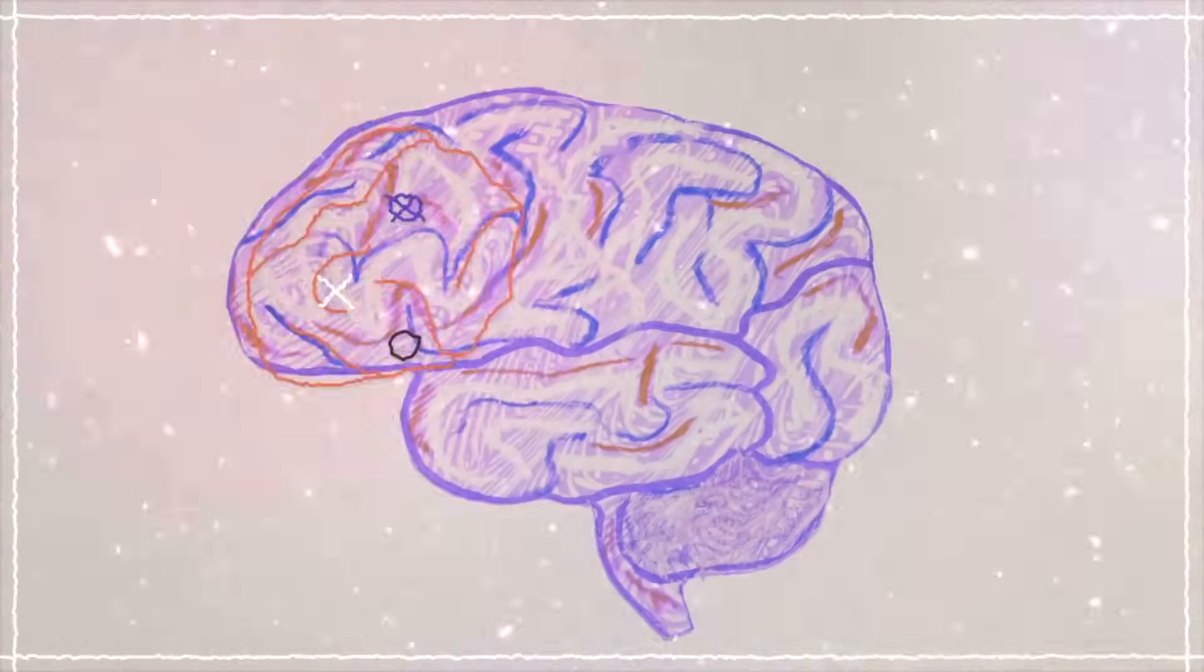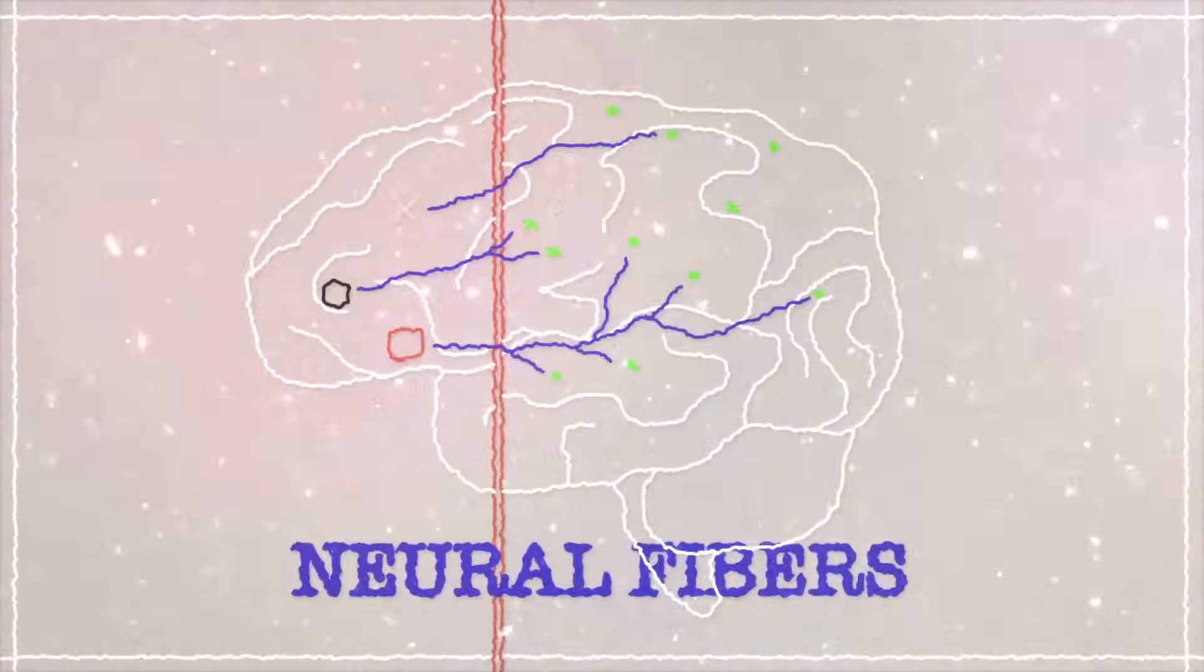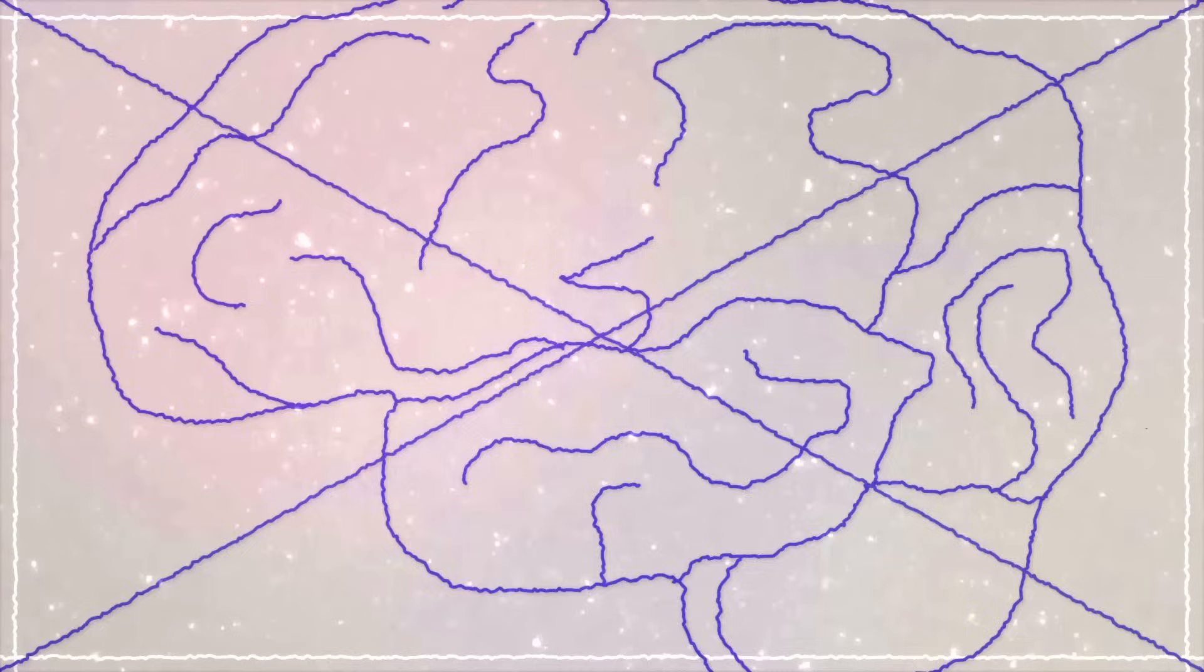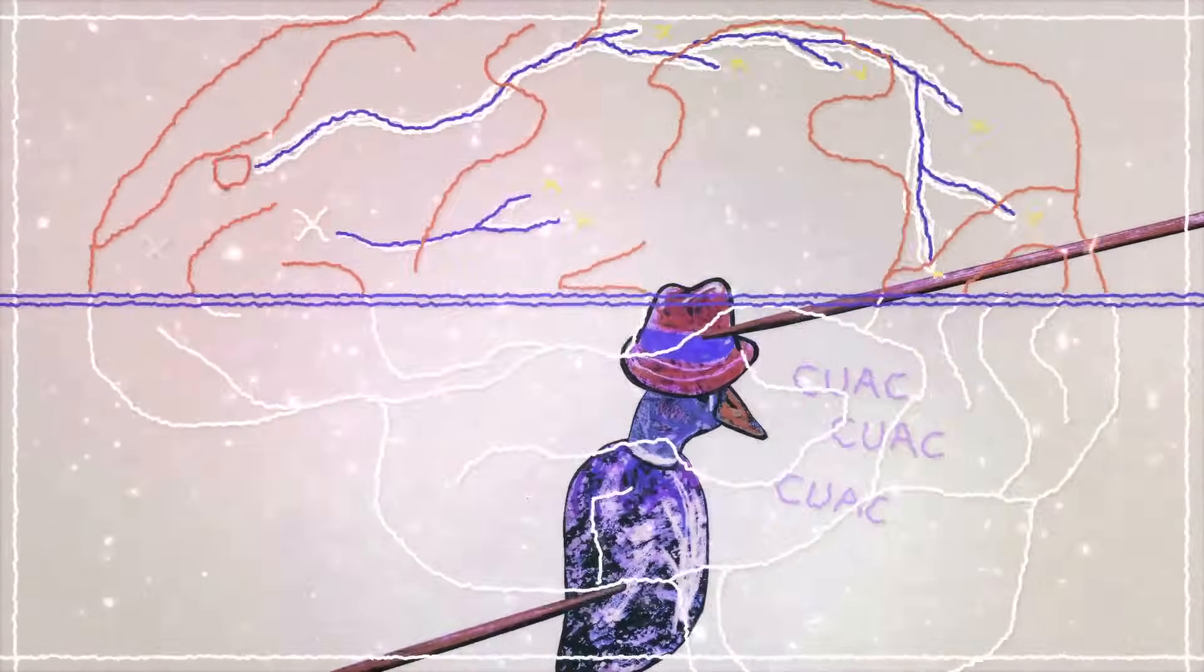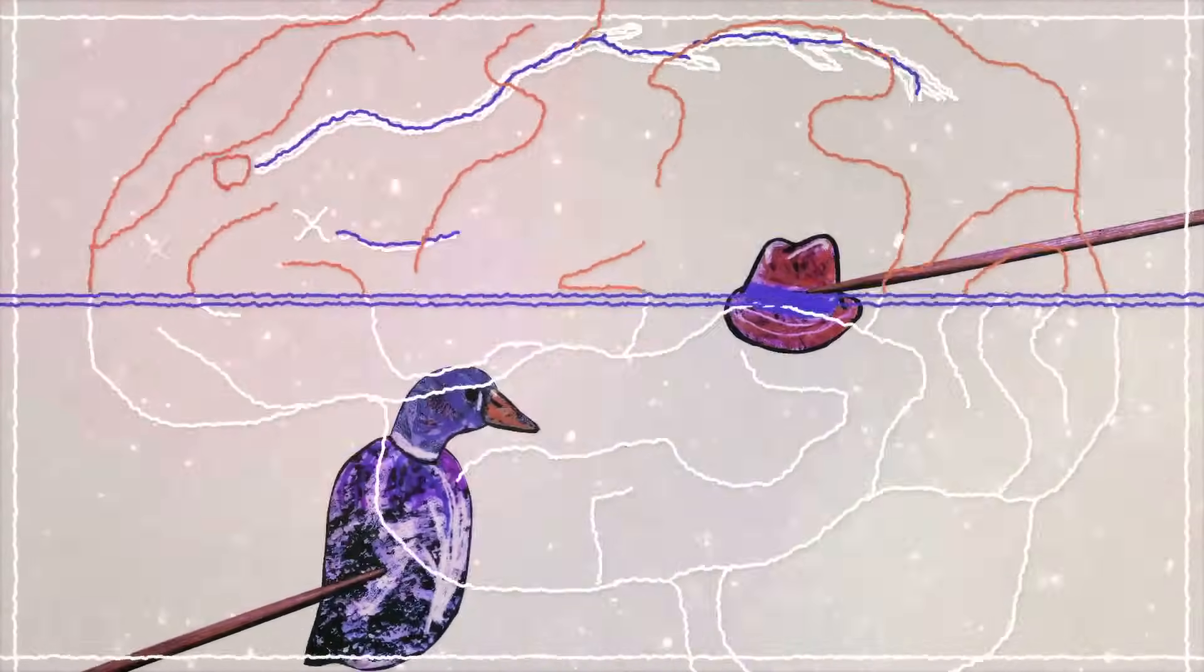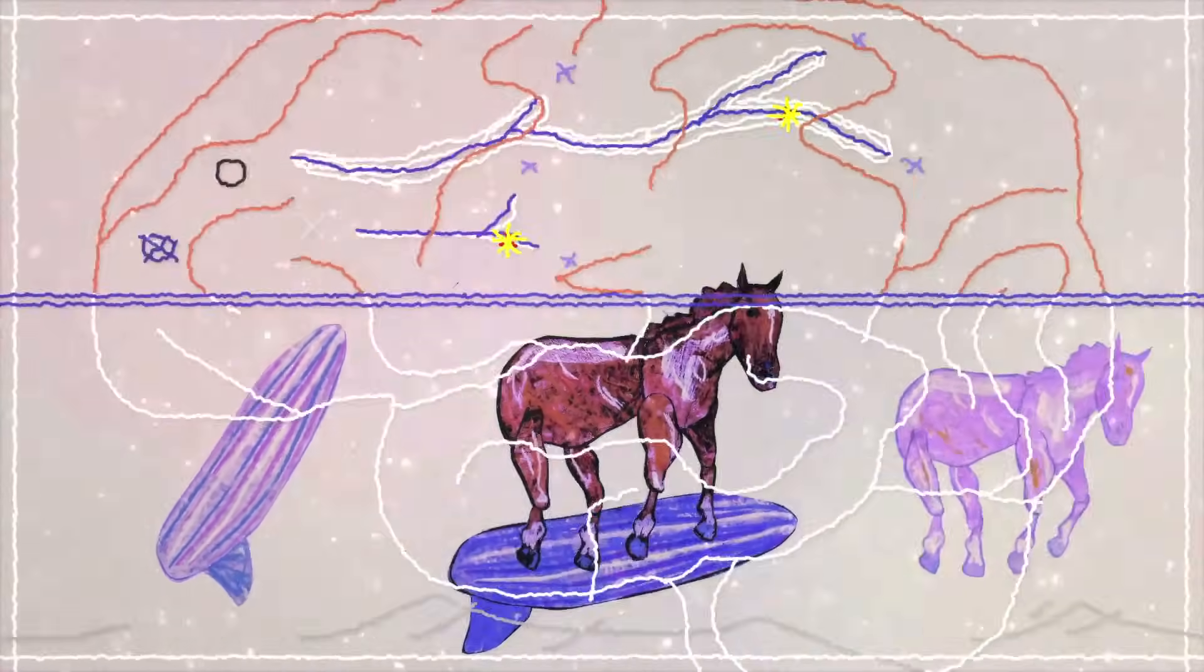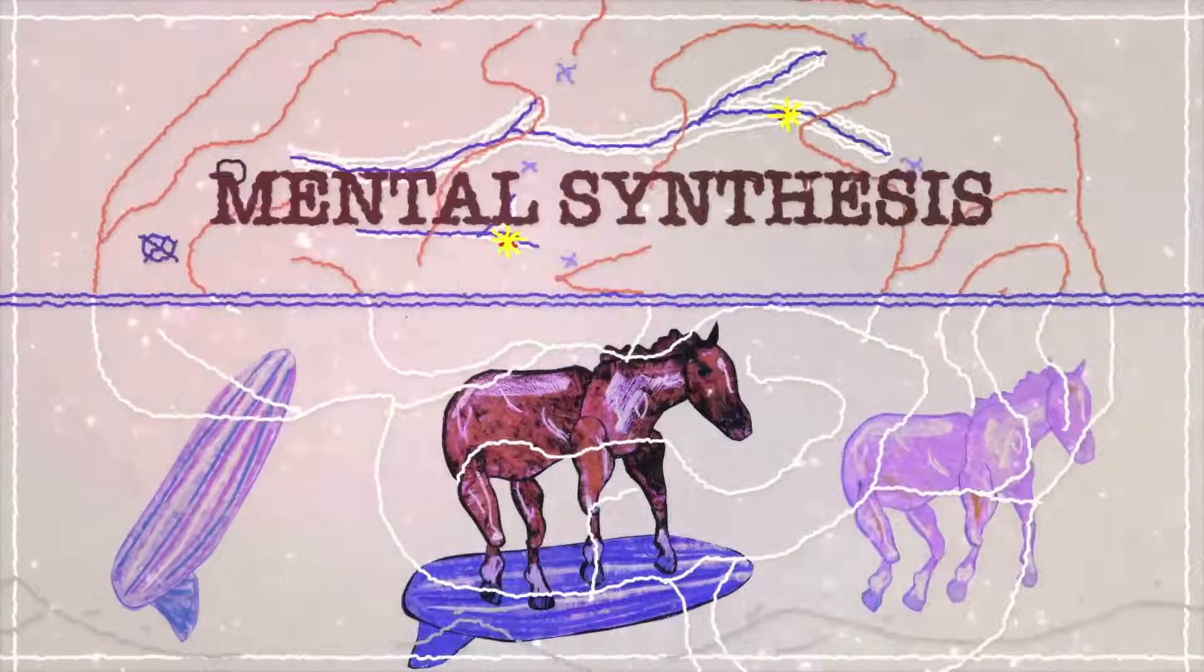Prefrontal cortex neurons are connected to the posterior cortex by long, spindly cell extensions called neural fibers. The mental synthesis theory proposes that, like a puppeteer pulling the strings, the prefrontal cortex neurons send electrical signals down these neural fibers to multiple ensembles in the posterior cortex. This activates them in unison. If the neuronal ensembles are turned on at the same time, you experience the composite image just as if you'd actually seen it. This conscious, purposeful synchronization of different neuronal ensembles by the prefrontal cortex is called mental synthesis.